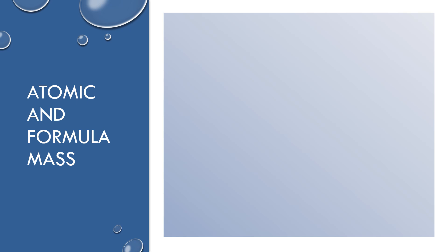I want to remind you that because isotopes have different masses — like carbon-12 and carbon-14 — and since both of those exist in nature, they're both contributing to the weighted average atomic mass. So the weighted average is what appears on the periodic table. For carbon, it's 12.01, because the small amount of carbon-14 atoms drives that mass slightly higher than 12. Whatever you see on the periodic table is an average of the isotopes of the element.